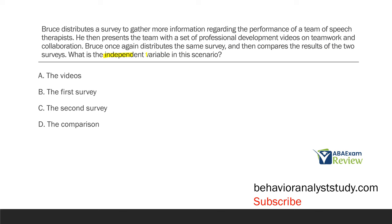You have to be familiar with independent and dependent variables. The dependent variable, like the name says, is dependent on the independent variable — and the dependent variable is typically our behavior. The independent variable is going to typically be whatever you're introducing or taking away: the intervention. In this scenario, Bruce is distributing the survey to look at the performance of a team. He then presents the team with videos on teamwork and collaboration, then gives the same survey and compares the results. If we're looking for the independent variable, we're looking for what was added, what was taken away, what was the intervention — because we want to see the independent variable's effect on the dependent variable.